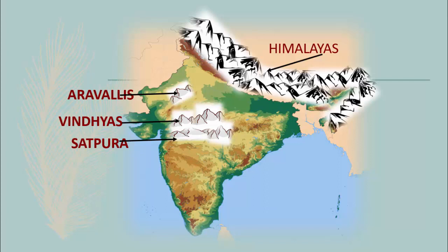Look at this map of India, children. These are the Himalayas, Aravallis, Vindhyas, and Satpura mountain ranges.